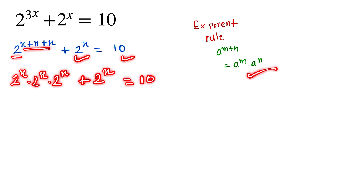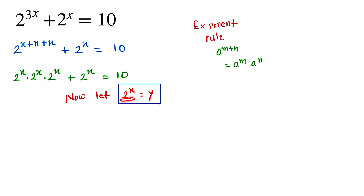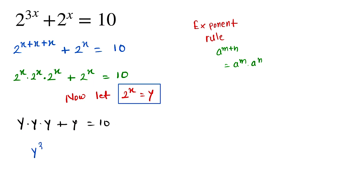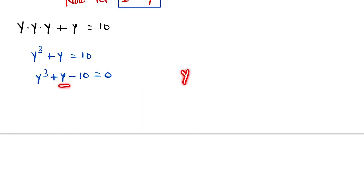Now we let y equal 2 to the power x. Substituting, we get y times y times y plus y equals 10, which simplifies to y³ + y = 10. This is a cubic equation: y³ + y − 10 = 0.